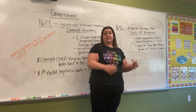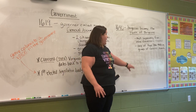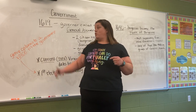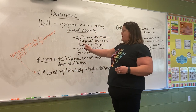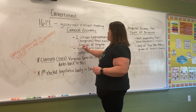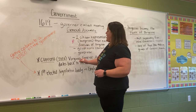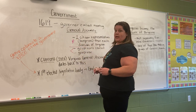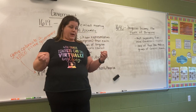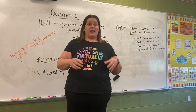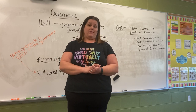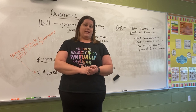The House of Burgesses met separately from the governor's council — similar to a student council meeting separately from the staff. They were one of two lawmaking bodies in the General Assembly, so instead of one General Assembly lawmaking body, there's now a split into two. This plays into how our government is run today. That's an overview of Jamestown and the government in Jamestown — I hope it helps you with the rest of your lessons this week.